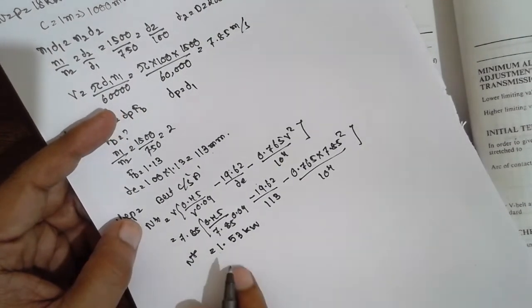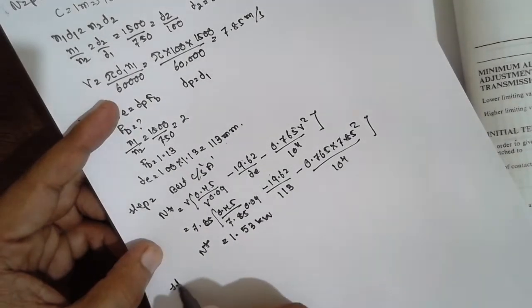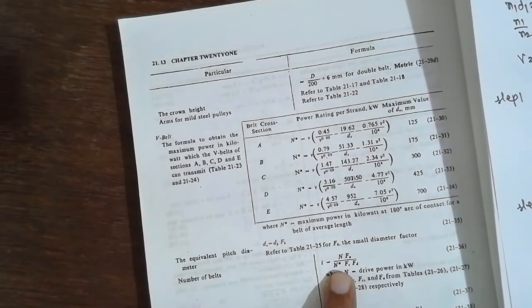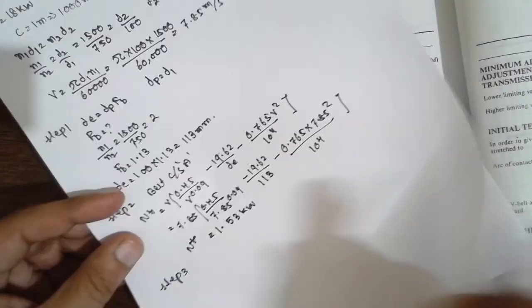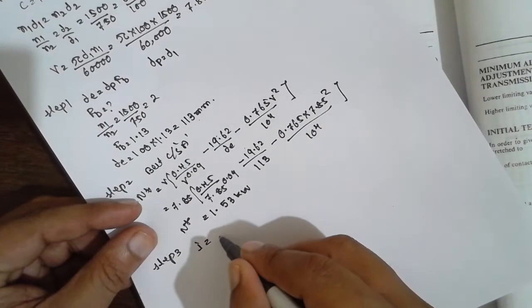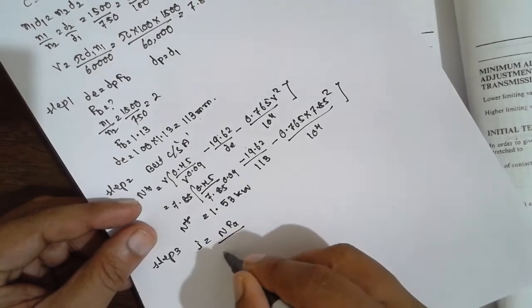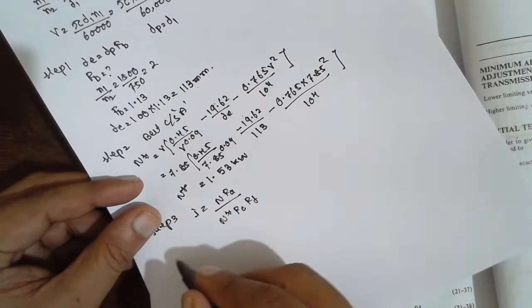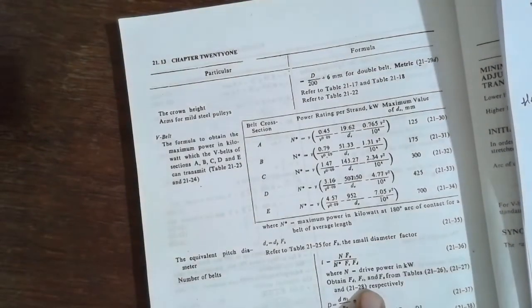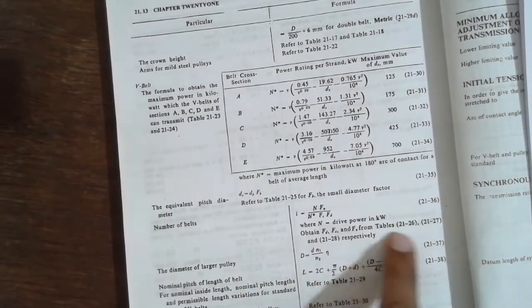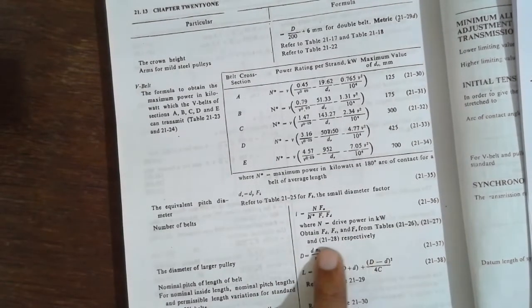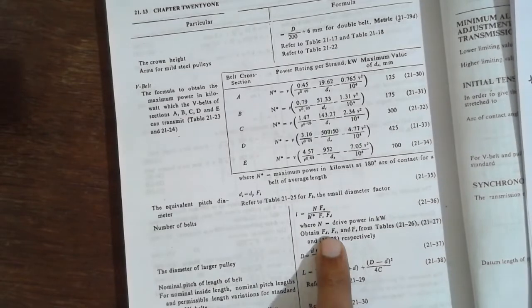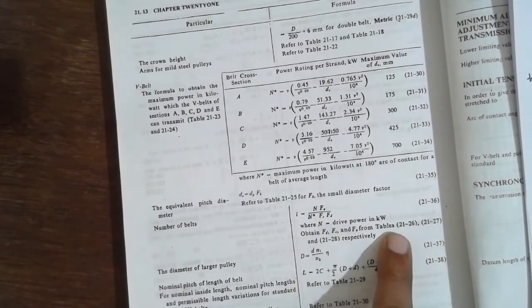Step 3: Finding the number of belts using the formula: i = N·FA / (n*·FC·FD). Now, one by one we find each correction factor. FA comes from Table 21-28, FC from Table 21-27, and FD from Table 21-26.